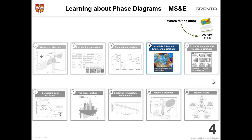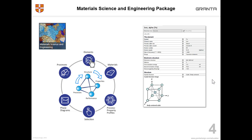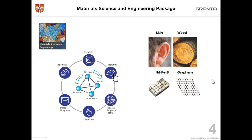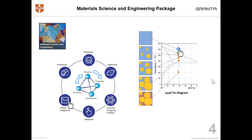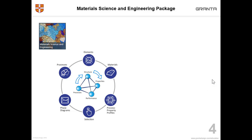On to tip number four. You can find out more about the Material Science and Engineering database in Lecture 6. This database is specifically designed to help students understand how processes change the structure of materials and how that affects the properties. It has information about the elements, materials including biological materials and functional materials, phase diagrams, information about mechanisms such as solid solution strengthening and how that affects the properties, and of course the selection tools as well.